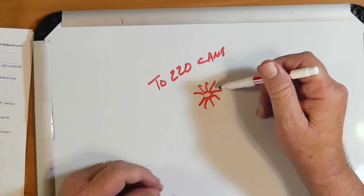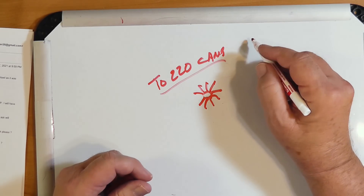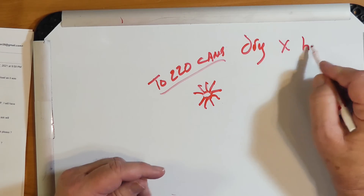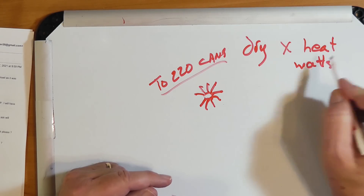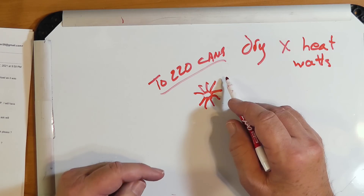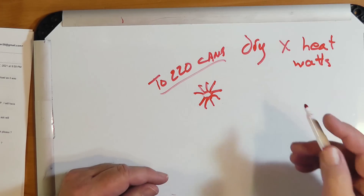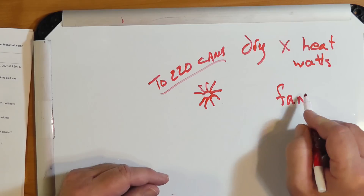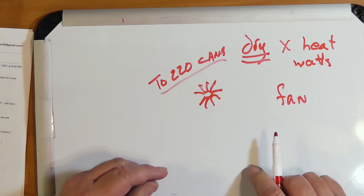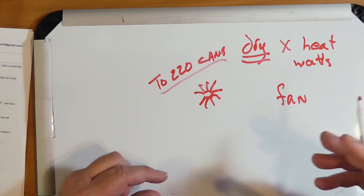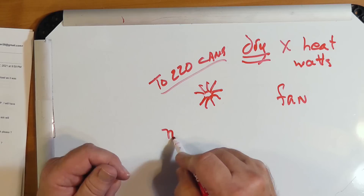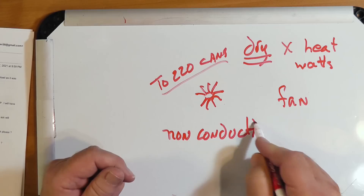A dry dummy load can dissipate a certain amount of heat, measured in watts. To get it to dissipate more, one option is to put a fan on it to push air across. You can buy dry dummy loads from MFJ, GX Engineering, and so on. Or you can go further and immerse it in a non-conducting fluid.